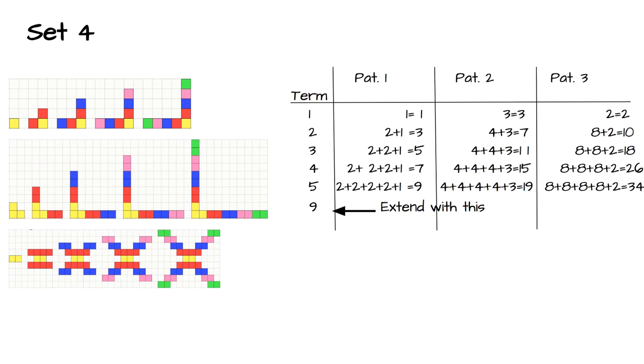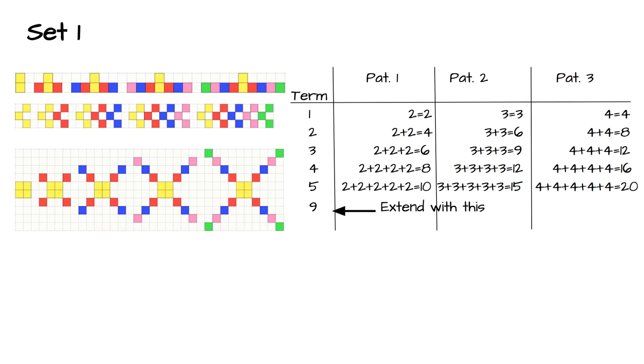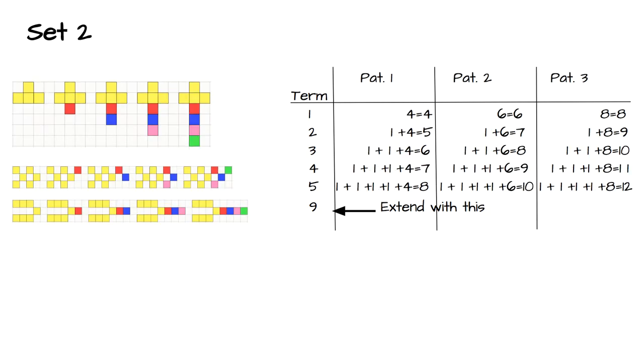Once everybody has their sets in the table, have them work with their group to determine the algebraic expression for each of the patterns. So for set one, they should have gotten 2n, 3n, and 4n for those patterns. For set two, they should have gotten n plus 3, n plus 5, and n plus 7 for their patterns. And at this point, we're not giving them any clues as to how they might go about getting those algebraic expressions.